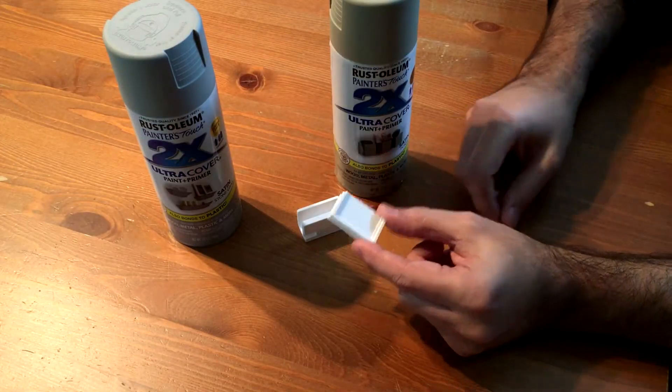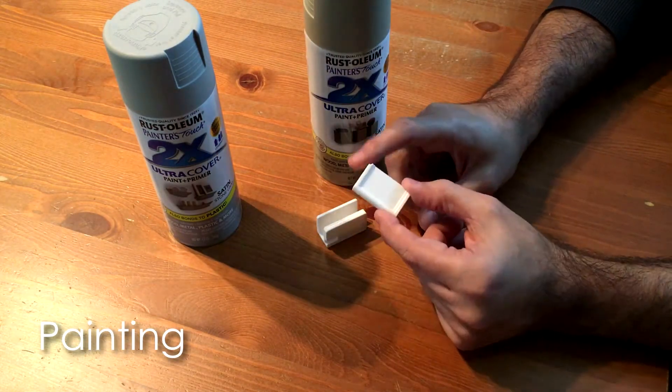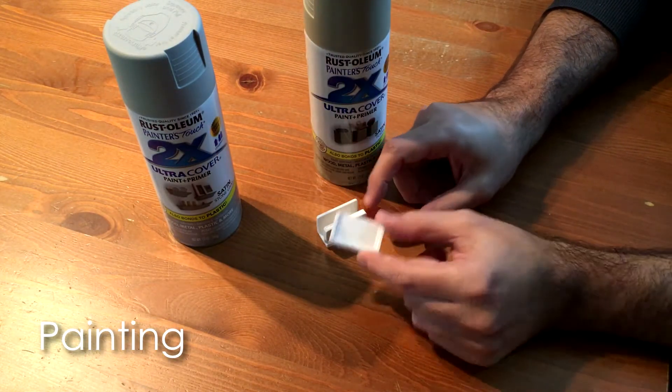To bring your mini machine to life you really have to give it some color. So you've got two options when it comes to coloring your mini machines: you can either print in the color plastic that you want to finish with, or you can paint.